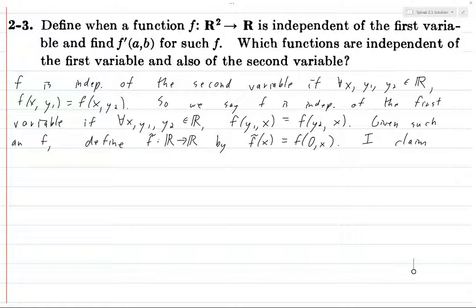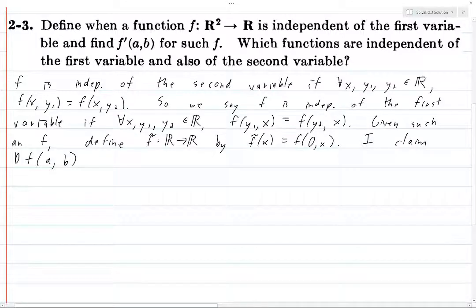So given such an f, define f tilde from R to R by f tilde x equals f of 0 comma x. So this is going to be a linear function from R to R. So this is going to be a function where we plug in A and B. No.